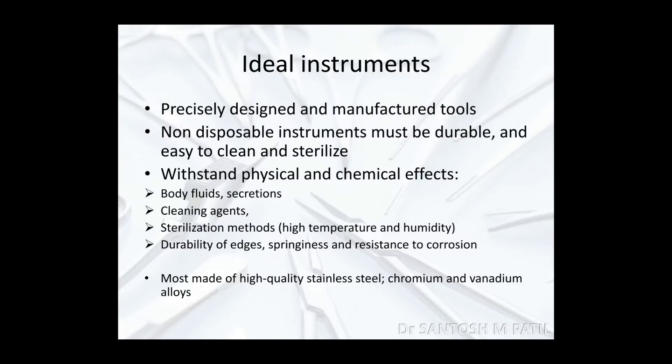Before understanding a surgical instrument, one should know the particular features a surgical instrument should have — what we call an ideal instrument. These instruments are precisely designed and manufactured tools, and most non-disposable surgical instruments must be durable and easy to clean and sterilize. All surgical instruments should withstand physical and chemical effects of body fluids, secretions, cleaning agents, sterilization methods, high temperature and humidity. One instrument should have durability of edges, sustainable springiness, and resistance to corrosion.